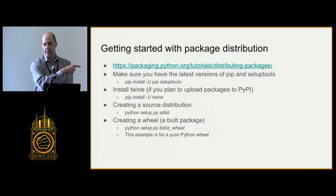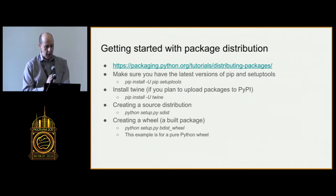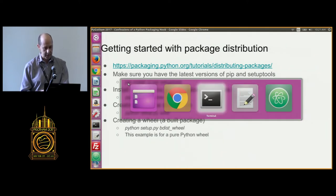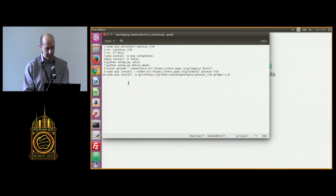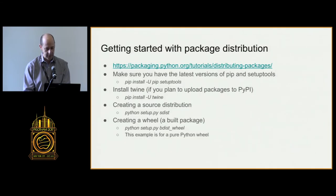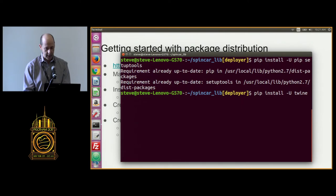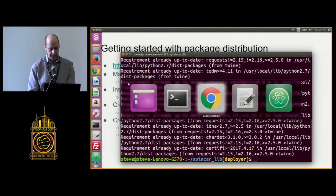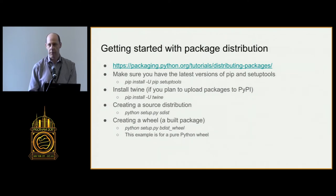The one other thing we really need to install is called Twine, and that is the utility that's going to let us upload our package to PyPI. We do pip install -U twine. It looks like that's installed as well. So with those three things installed — pip, setuptools, and Twine — I'm ready to go.